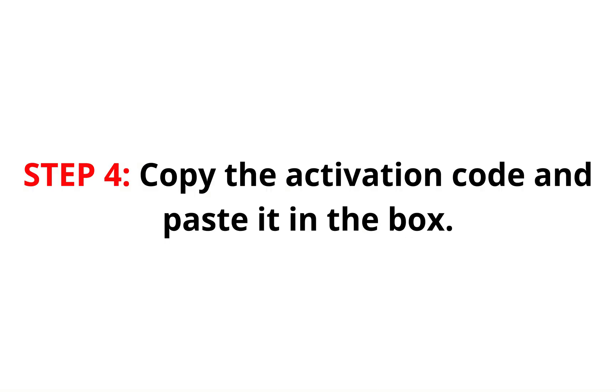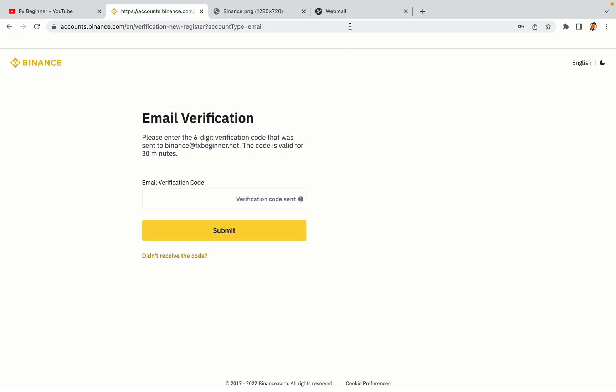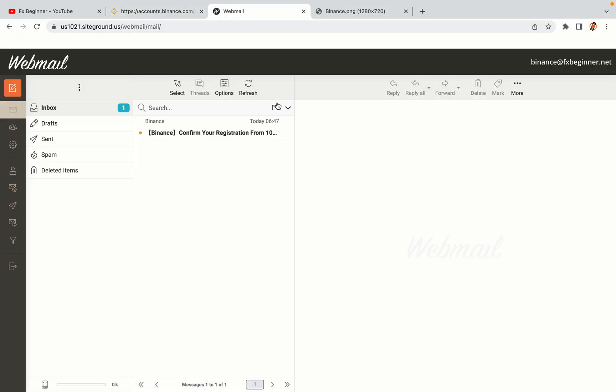Step 4: A confirmation code will be sent to your mail. Open your mail inbox, copy the code and paste it in the box to fully activate your Binance trading account.